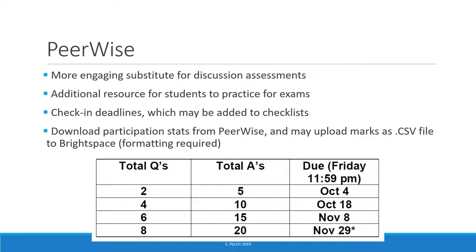I structure the assessment to include three check-in deadlines, at which students earn one mark for meeting a milestone. To mark a check-in, I download a participation summary from PeerWise as well as a CSV file from Brightspace for the grade column I need to mark. I manually update the CSV with a 1 for each student that met the milestone requirements — this is relatively quick with the two documents open in Excel side by side.